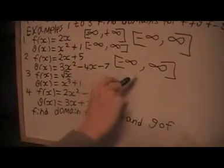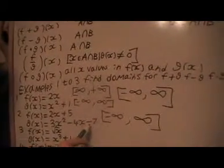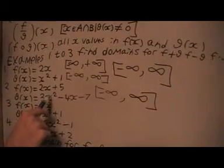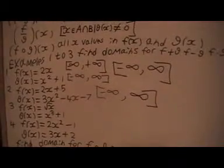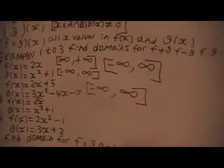For the first three, because those first three are the same, and for F over G of X, we don't want this to be 0, but the only time it's 0 is if X is a complex number, so that's not included. So this is the domain for all of them again.